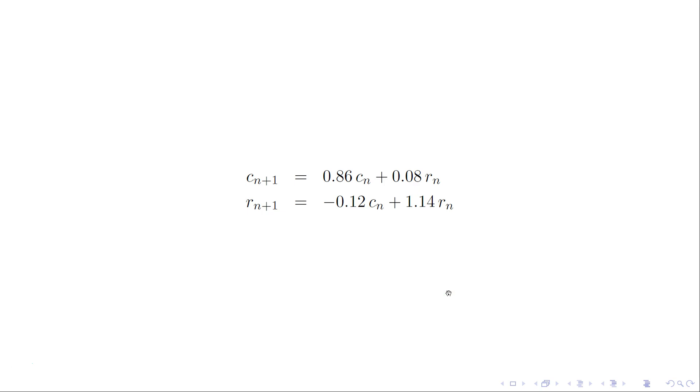So here's our two equations, the cn+1 and the rn+1. Next year's populations are based on the current year's populations in this linear way.